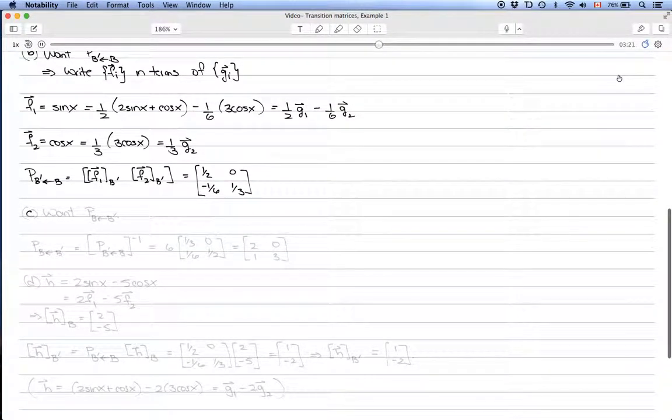Part C of the problem is even easier given part B. We want the transition matrix from B prime to B. But remember that the transition matrix of B prime to B is just the inverse of the transition matrix from B to B prime.